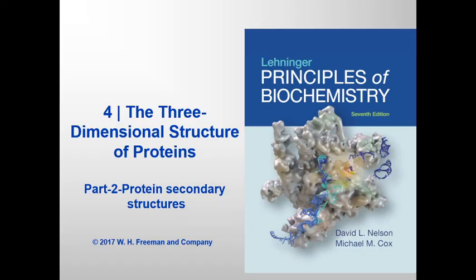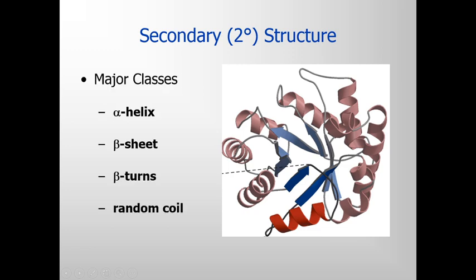Welcome to chapter 4, the three-dimensional structure of proteins. In this lecture, we will learn about protein secondary structures. Major classes of secondary structural elements include alpha helices, beta sheets, beta turns, and random coils.